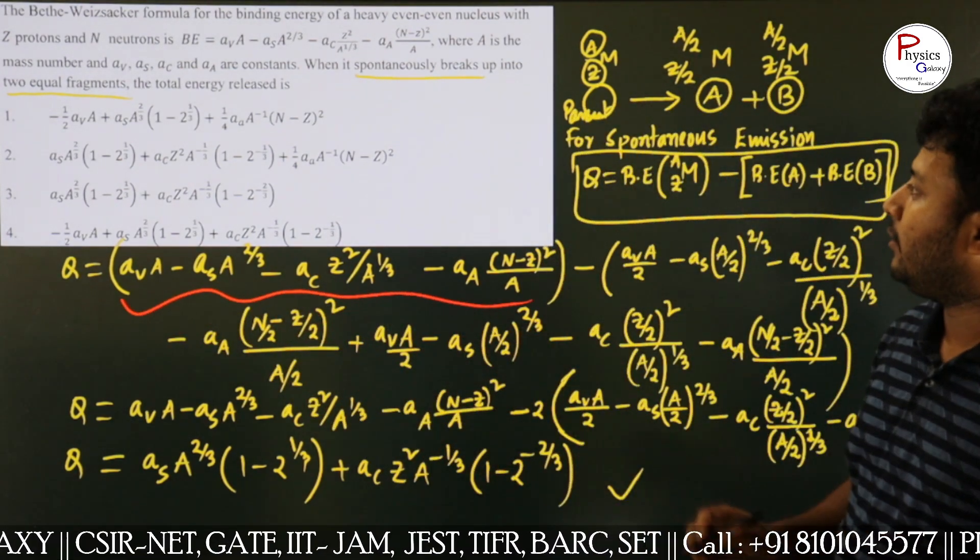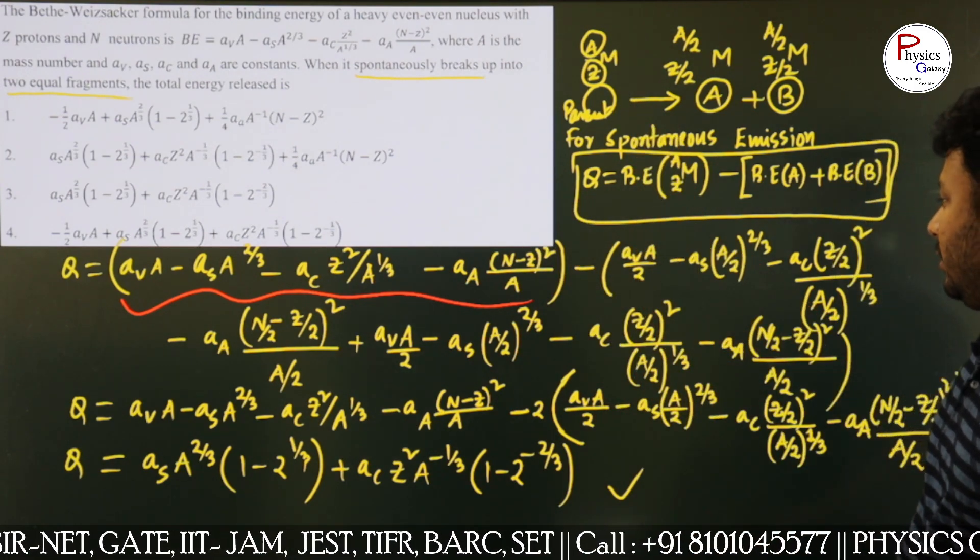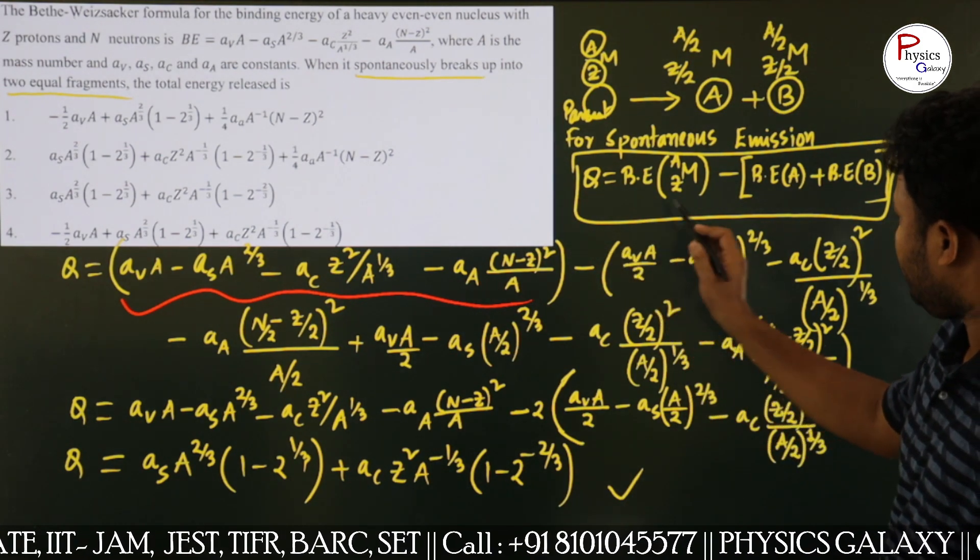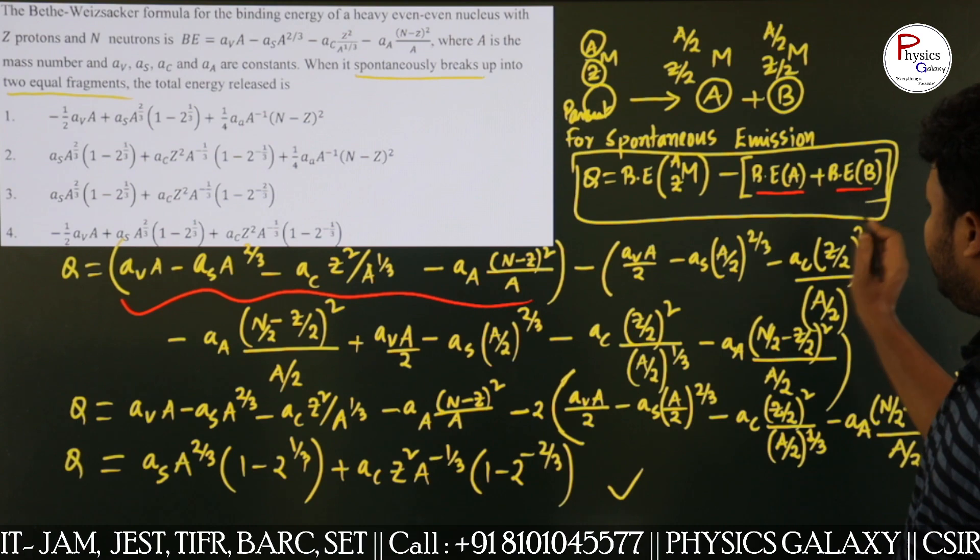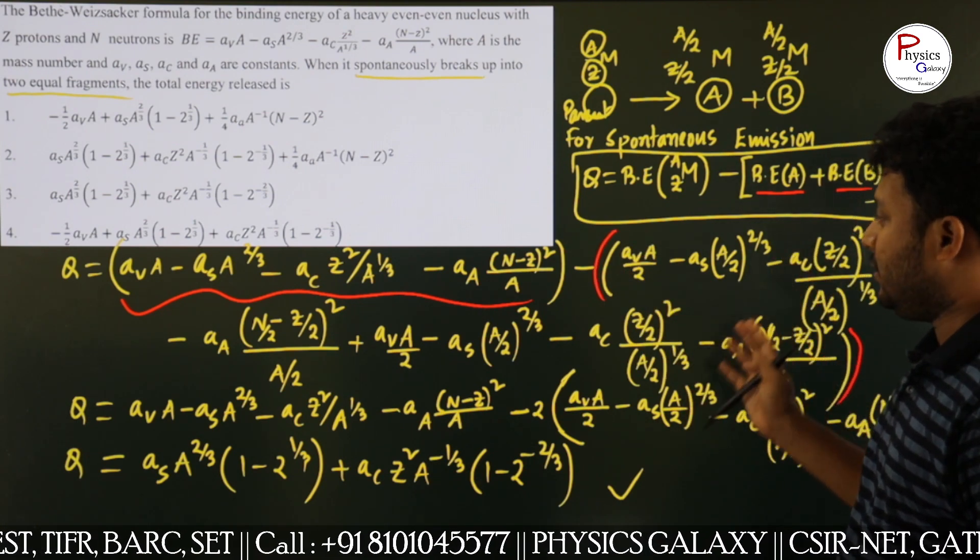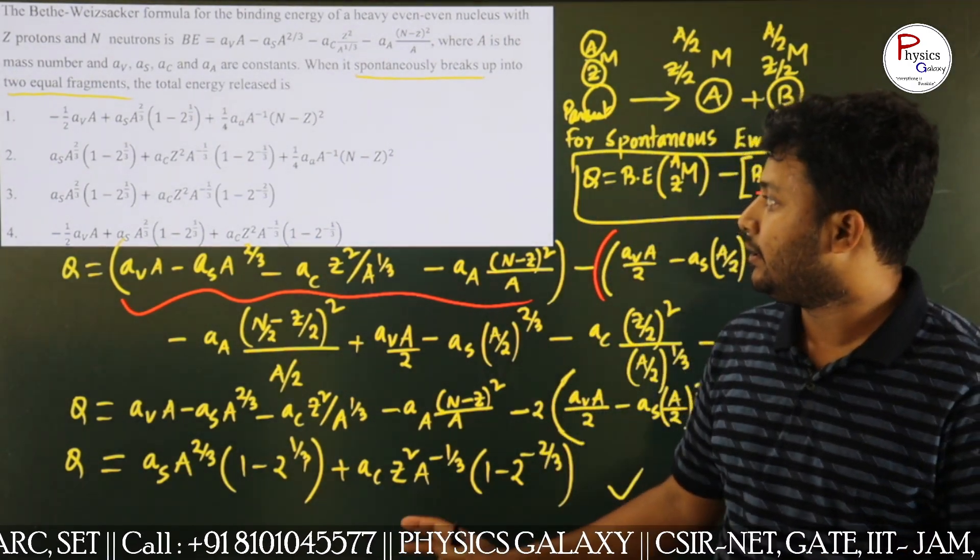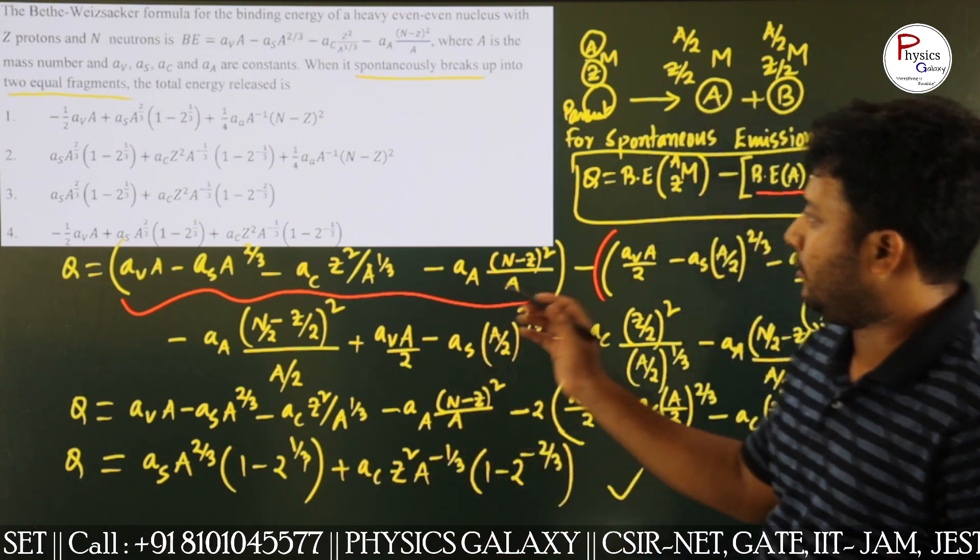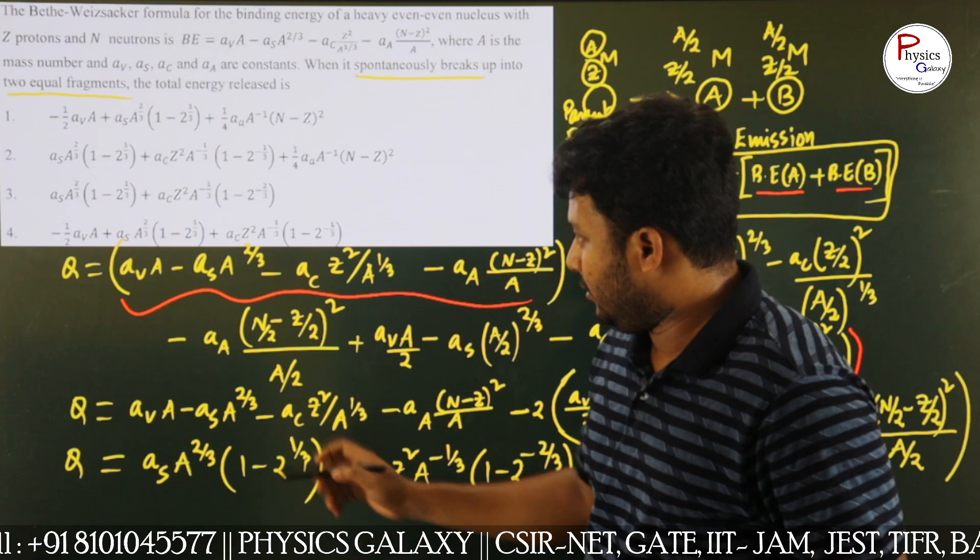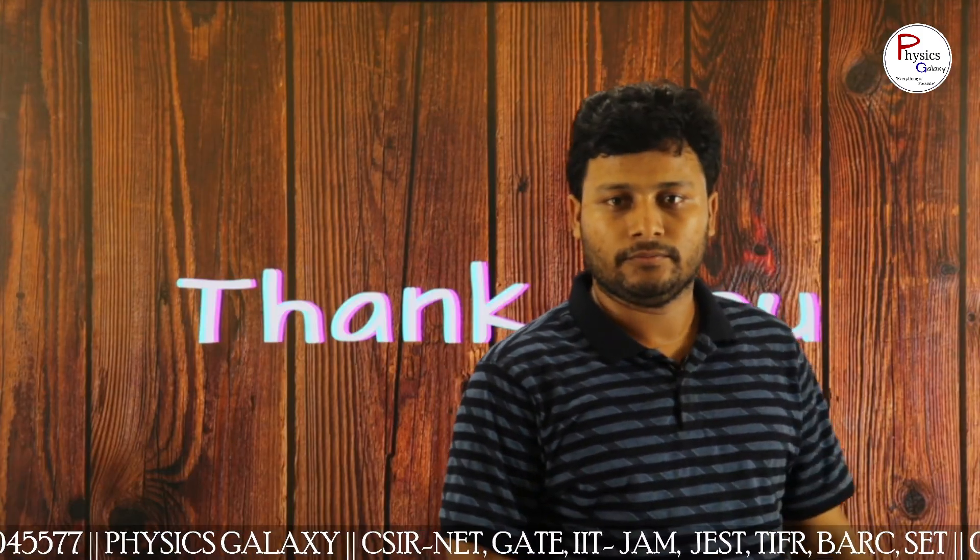Binding energy form for the parent nuclei. Here minus A and B. When the energy A and B terms cancel out, the result is the energy released during the decay. So the correct option is option 3. Thank you.